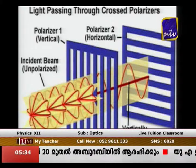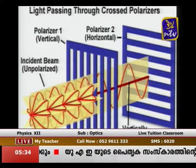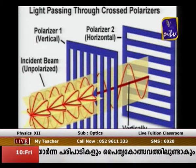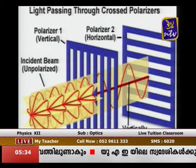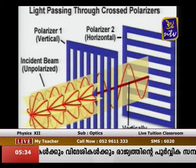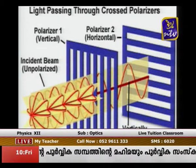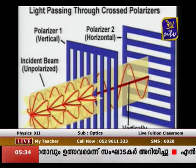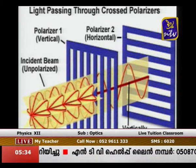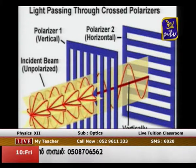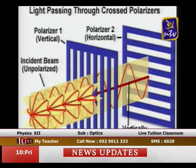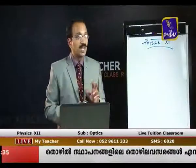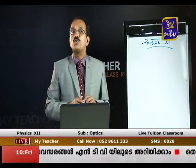Polarization: light has vibrations present in all directions. When passing through a polarizer — say a vertical polarizer — the light is confined to vibrations in only one plane, and what comes out is polarized light. When a second polaroid with a horizontal pass axis is kept, no light passes through. Polarizers are used in sunglasses and tinted sun-control films in vehicles to reduce the intensity of light.